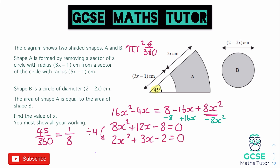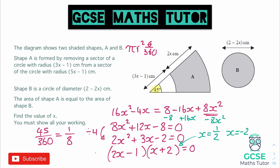Now we factorise to solve. Putting this into double brackets, we need 2x in one bracket and x in the other to get 2x squared. Our factors need to be 1 and 2 to give a constant of negative 2. To make plus 3x, putting 2 in the right bracket doubles it to 4, and 1 in the left bracket gives 1. So 4 minus 1 equals 3, giving us 2x minus 1 times x plus 2 equals 0. The solutions are x equals 1 half and x equals negative 2.